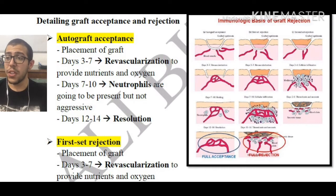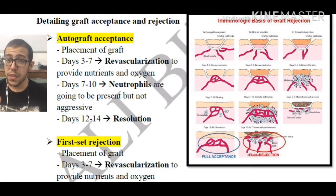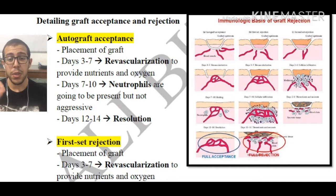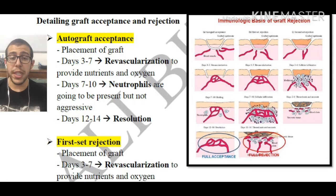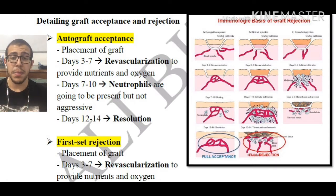Days 7 to 10, neutrophils are going to be present but not aggressive. This is very important and something that distinguishes autograft acceptance from the other rejections. Days 12 to 14, resolution is going to be taking place — essentially everything is back to normal.